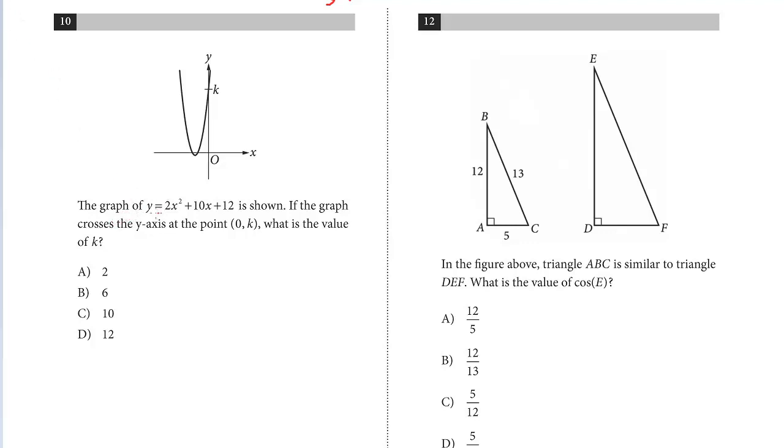The graph of y = 2x² + 10x + 12 is shown. If the graph crosses the y-axis at the point (0,k), what is the value of k? This question is really very straightforward. What are they asking for? Where it crosses the y-axis at point (0,k).